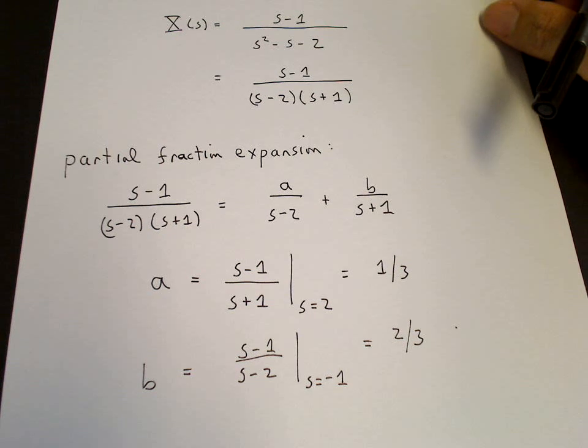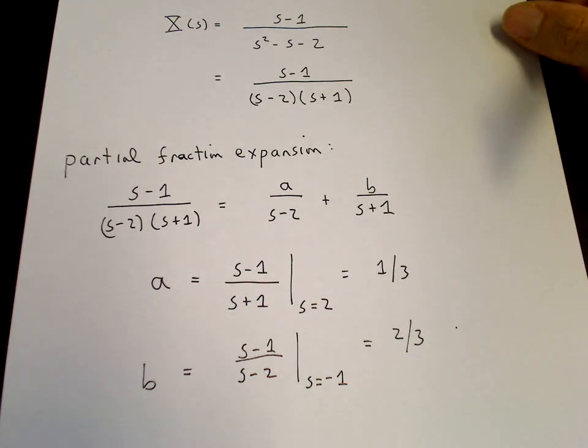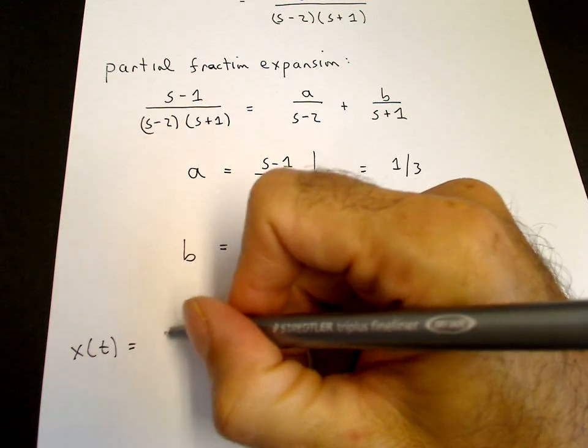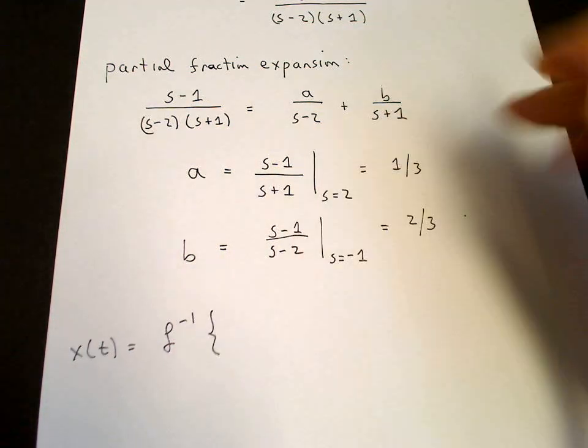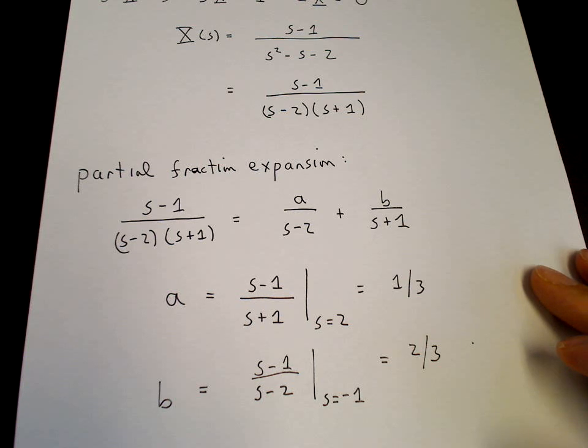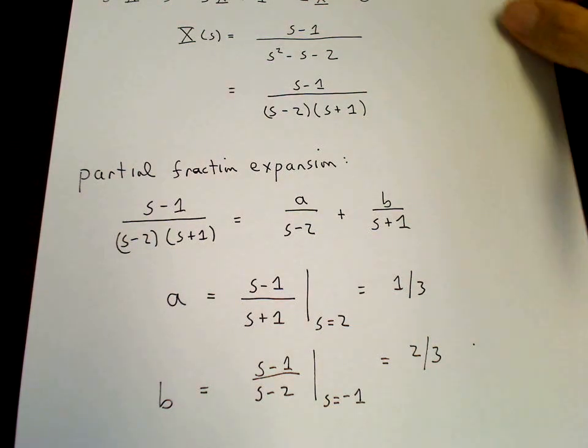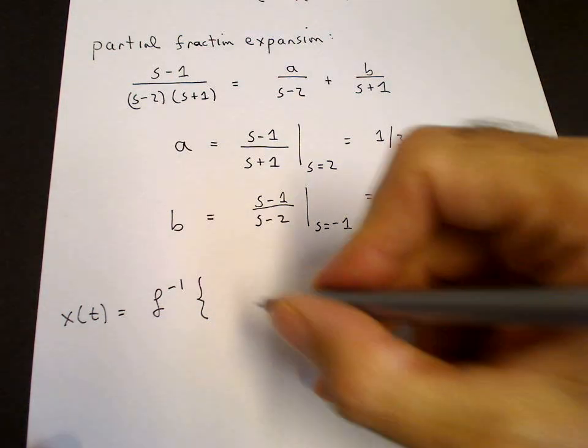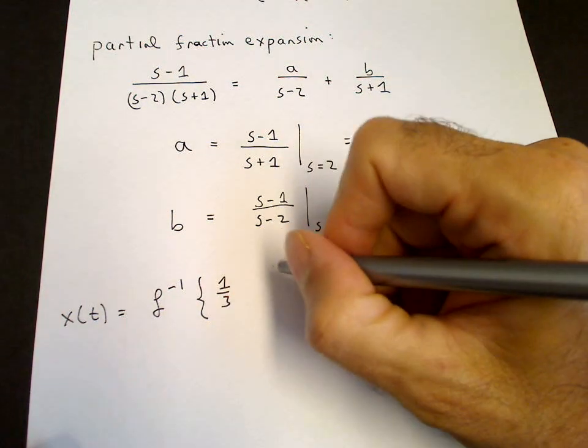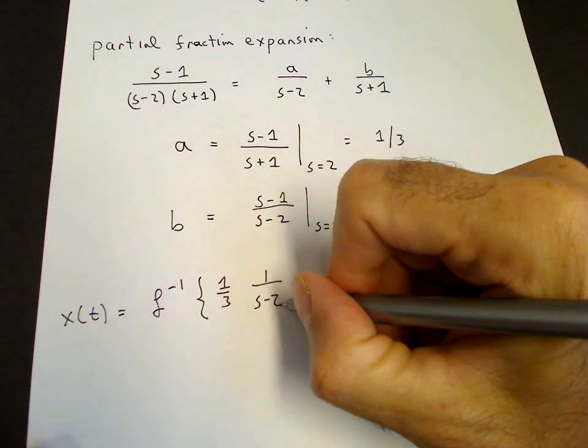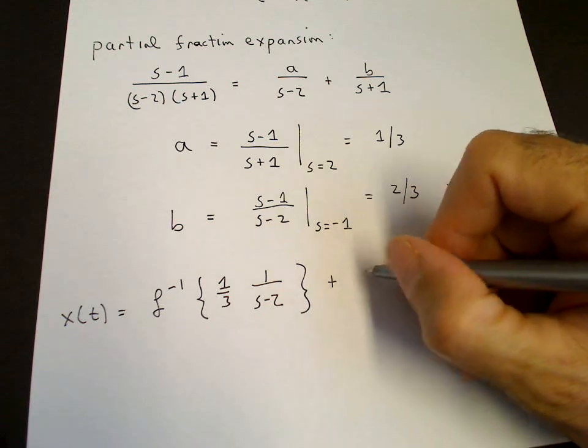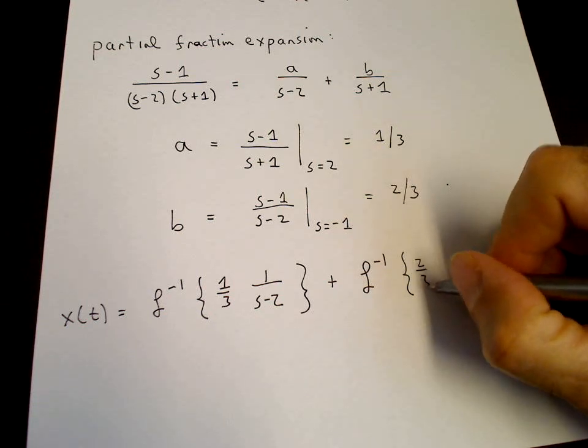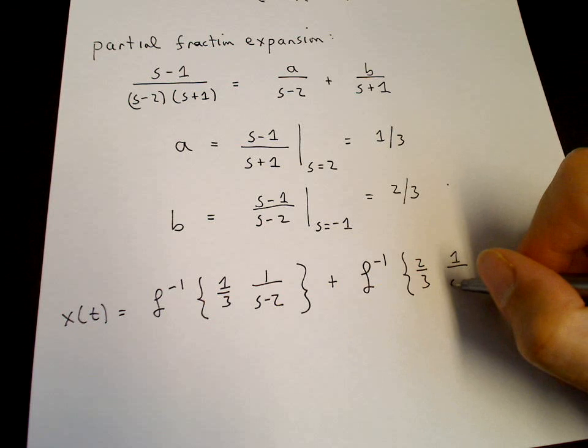And now we're ready to go. So to find X of T, we take the inverse Laplace transform of X of S. So we have X of T equals the inverse Laplace transform of X of S, which is A over S minus 2 plus B over S plus 1. So that's A is one-third over S minus 2. And then we use the linearity of the inverse Laplace transform. So the inverse Laplace transform of B, two-thirds over 1 over S plus 1.